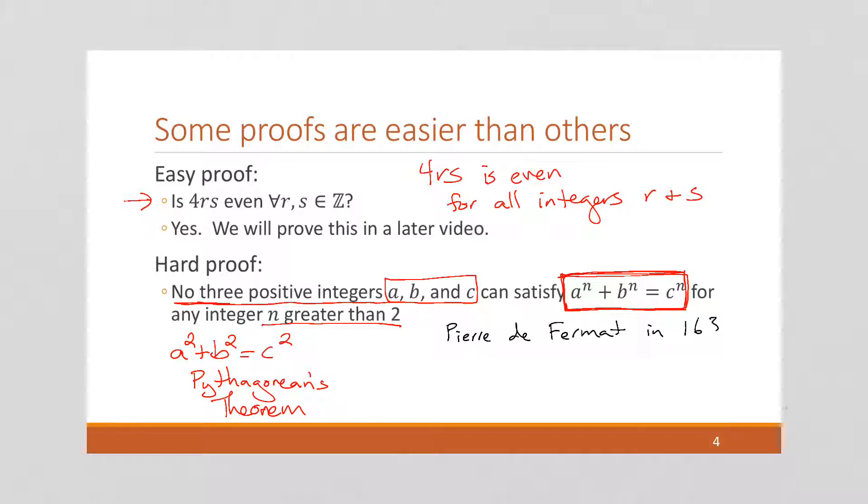1637. And what happened was he scribbled in the margin of a book that he was reading and he said 'I have discovered a truly marvelous proof of this proposition that this margin is too narrow to contain.' And then he died.